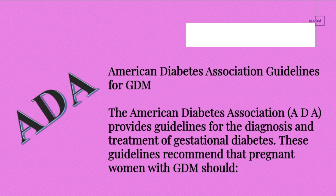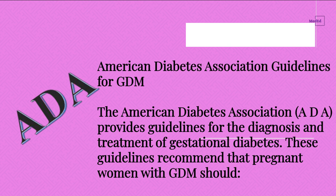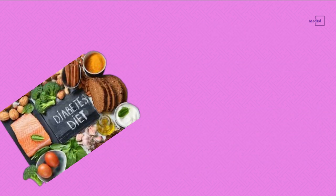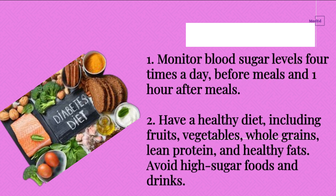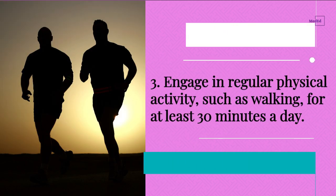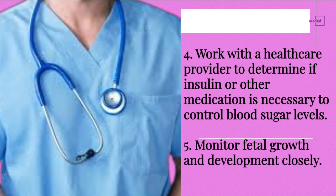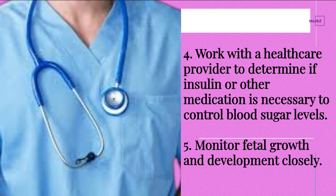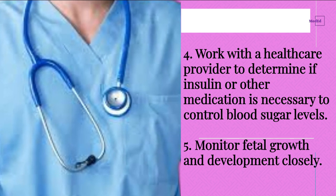American Diabetes Association Guidelines for GDM. The American Diabetes Association (ADA) provides guidelines for the diagnosis and treatment of gestational diabetes. These guidelines recommend that pregnant women with GDM should: 1. Monitor blood sugar levels four times a day, before meals and one hour after meals. 2. Have a healthy diet, including fruits, vegetables, whole grains, lean protein, and healthy fats — and avoid high sugar foods and drinks. 3. Engage in regular physical activity, such as walking, for at least 30 minutes a day. 4. Work with a healthcare provider to determine if insulin or other medication is necessary to control blood sugar levels. 5. Monitor fetal growth and development closely.